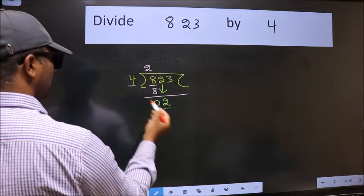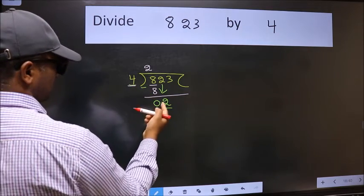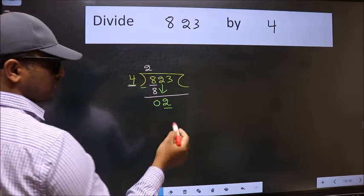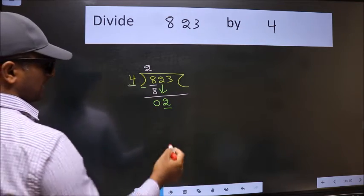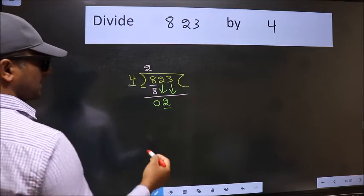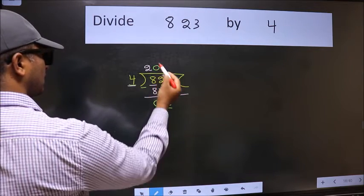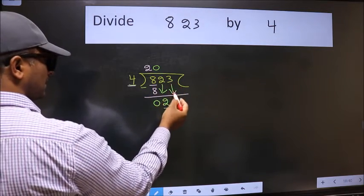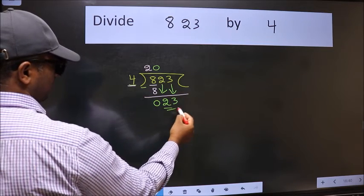Now here we have 2 and here 4. 2 is smaller than 4. So we should bring down the second number. And the rule to bring down second number is we should put 0 here. Then only we can bring this number down. Now 23.